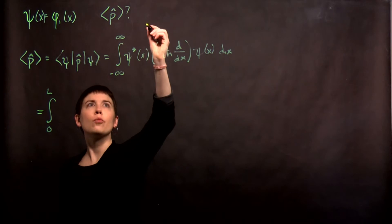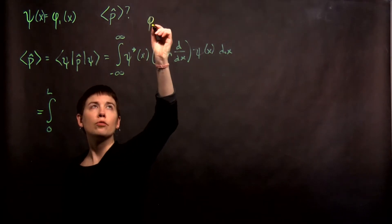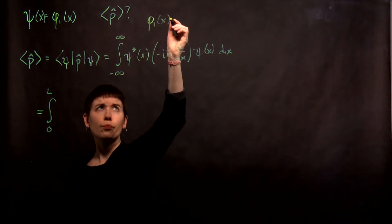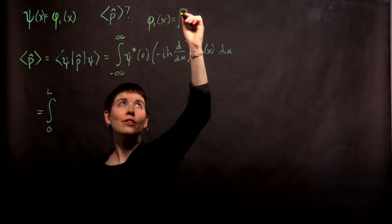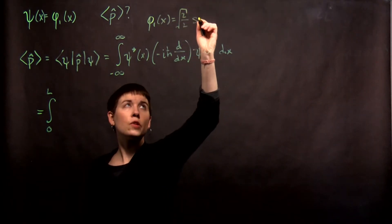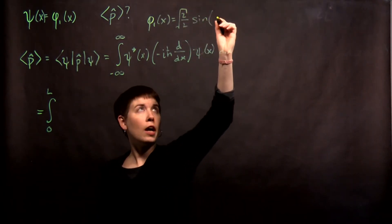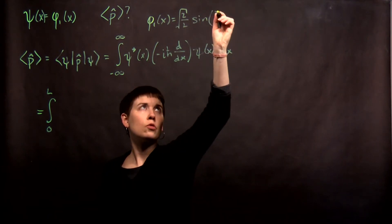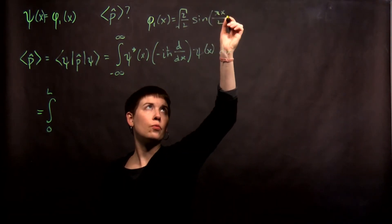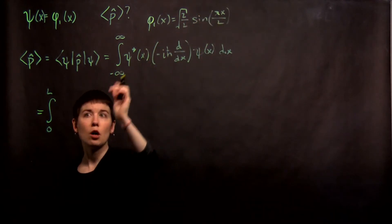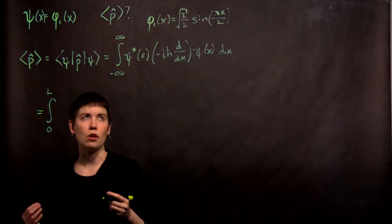We know that when I have phi 1 of x, that was square root of 2 over L sine n pi x over L. So n, in this case, is in fact 1, so that's pi x over L. Since this is real, complex conjugate of it is just itself.